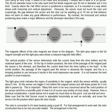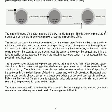Exactly where the Hall effect sensor is positioned is important, so it is mounted in a way which allows both horizontal and vertical adjustment. Obviously the sensor must not touch the rotor. And surprisingly, the gap between the sensor and the rotor can be anything up to 10mm as that distance does not seem to make any great difference to performance. By contrast, the horizontal and vertical positioning does make a major difference. The magnetic effects of the rotor magnets are shown in this diagram here. The dark grey region in the center is the full magnetic strength and the light grey area surrounding it shows a reduced magnetic field effect.